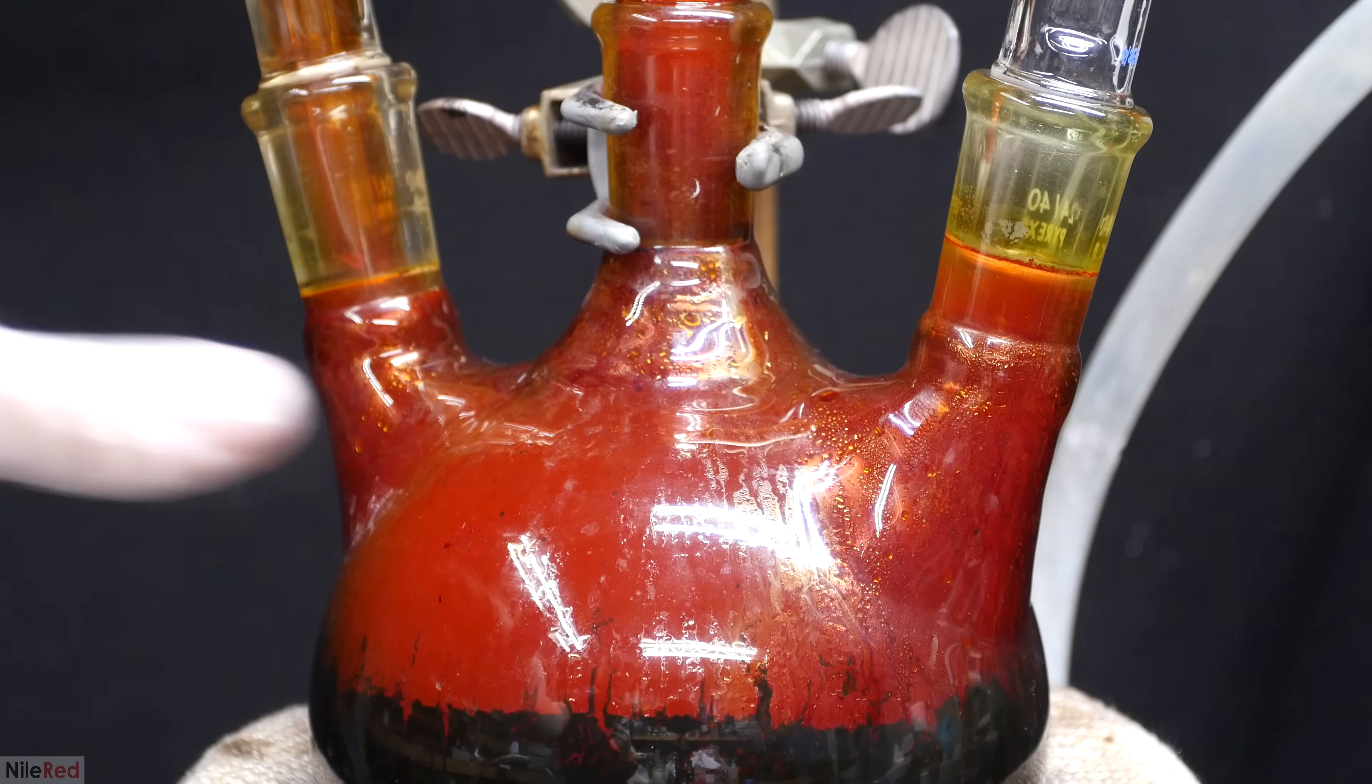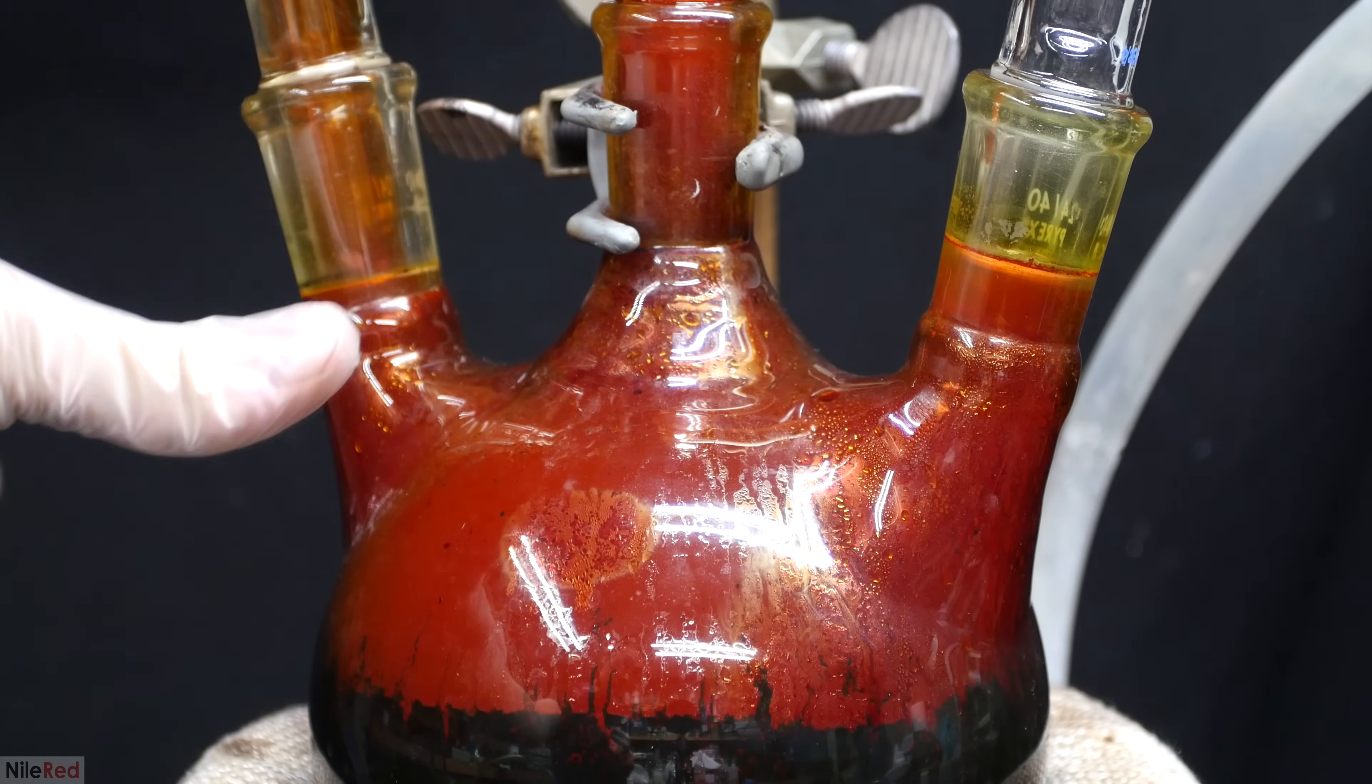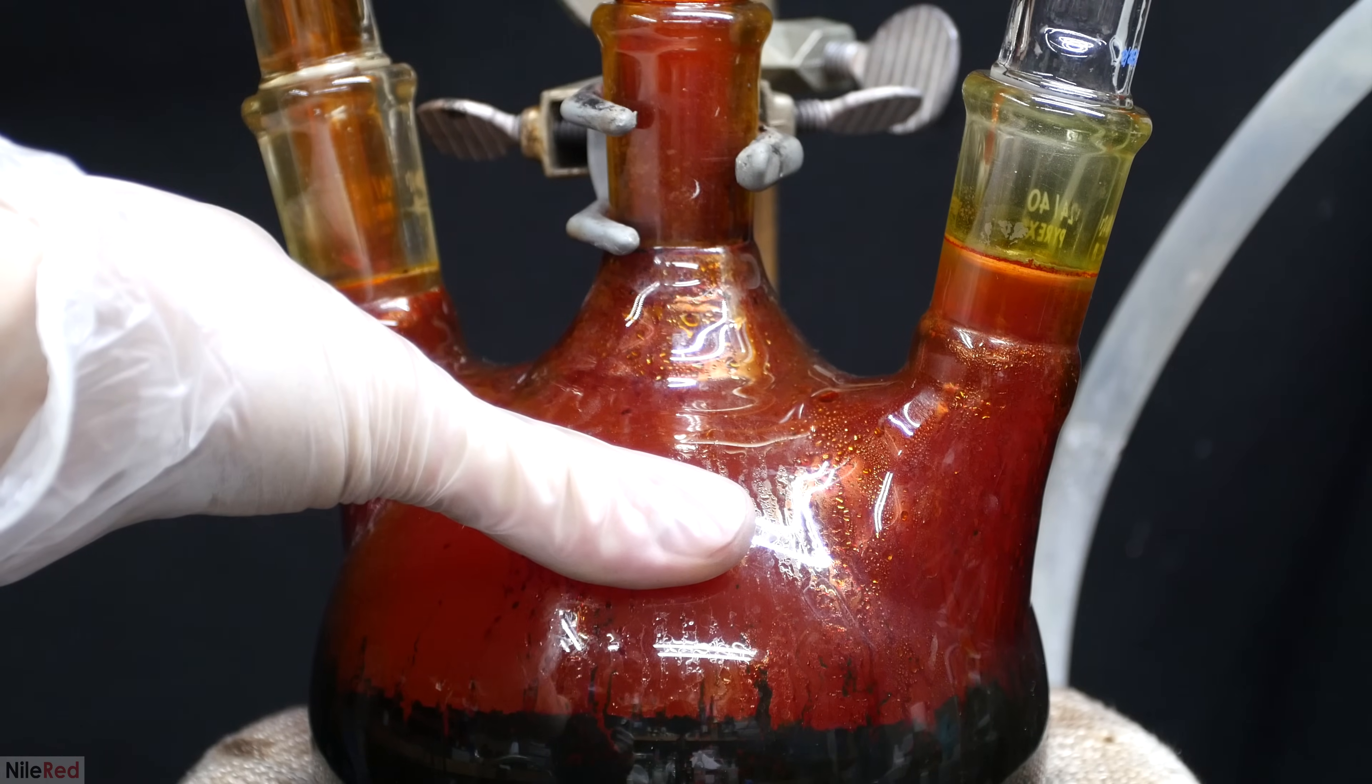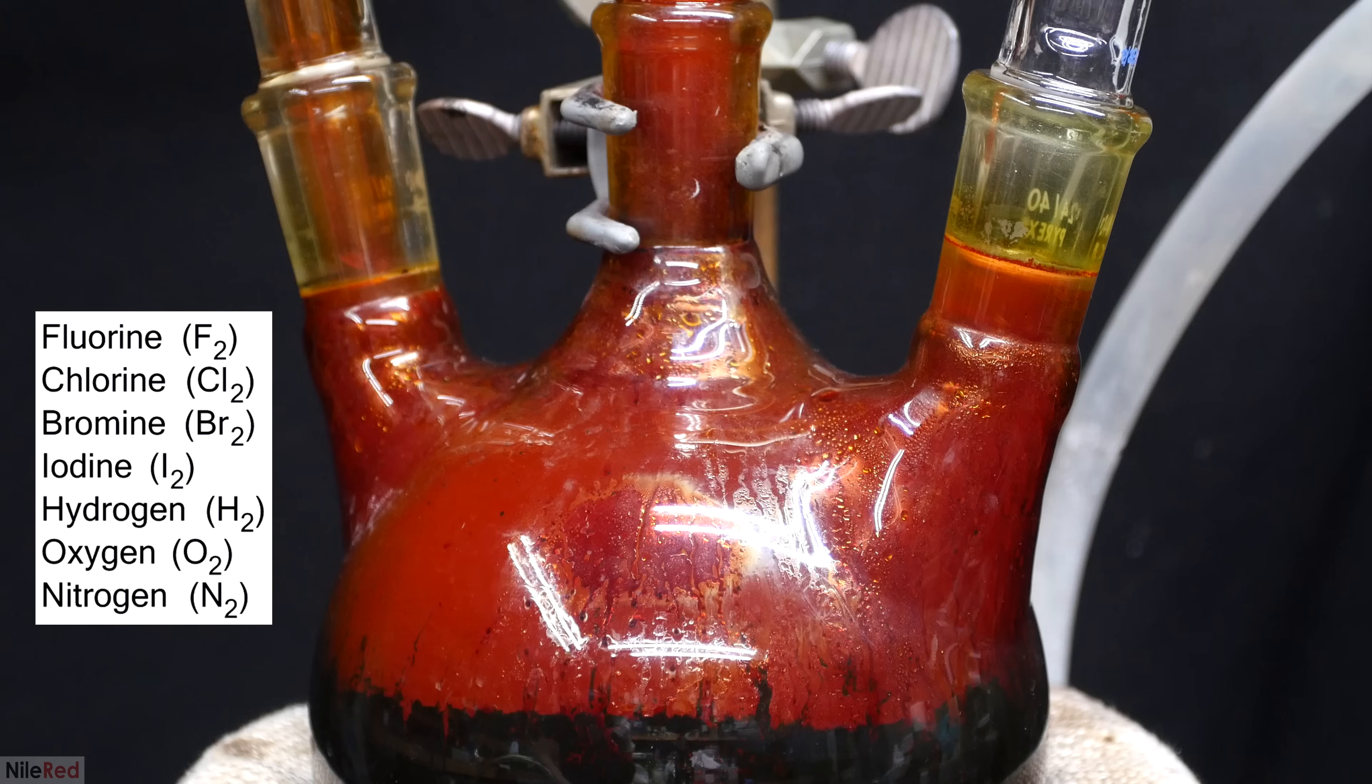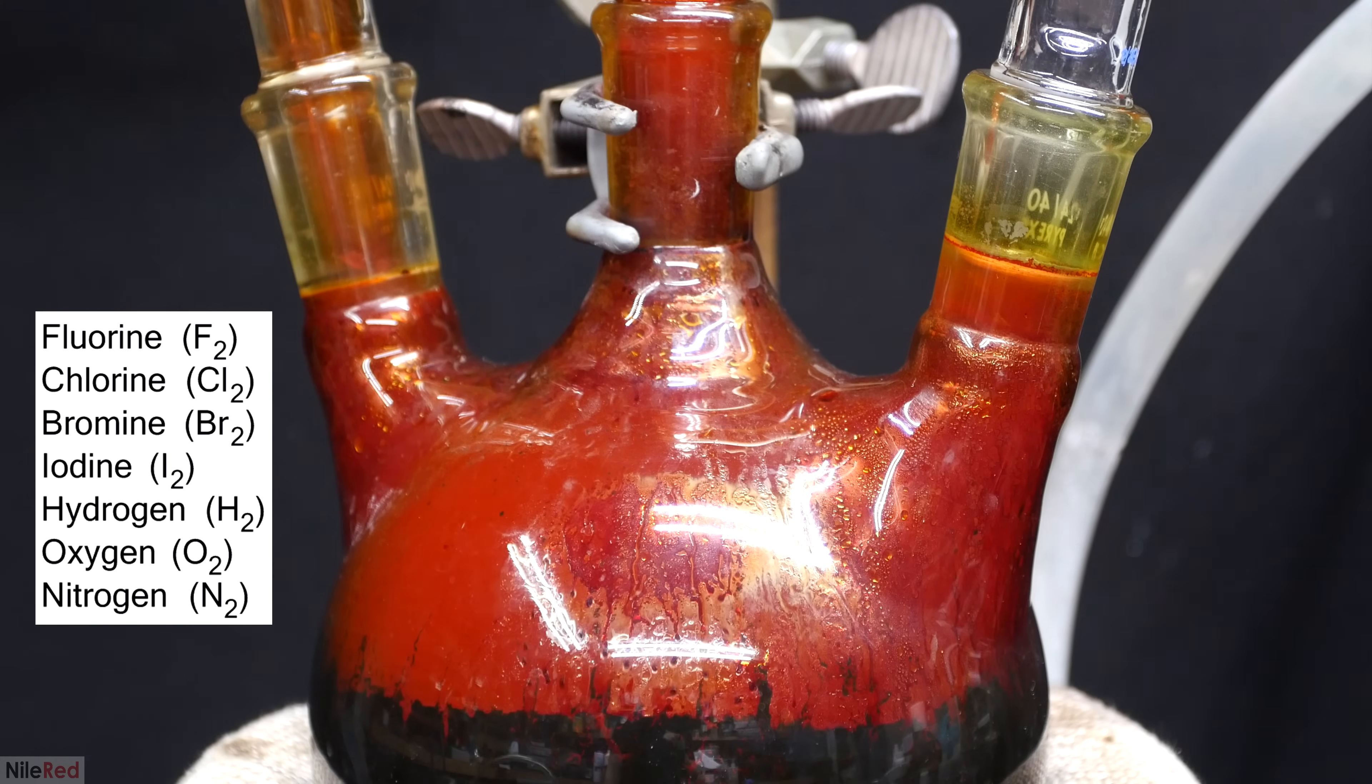One other quick thing to mention is that bromine is a diatomic molecule which means it never exists as just Br and it's always combined with itself to make Br2. This isn't unique to bromine though and there's a slew of other diatomic elements and instead of saying all of them I'll just provide a list here.